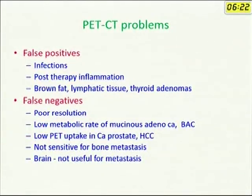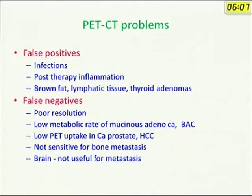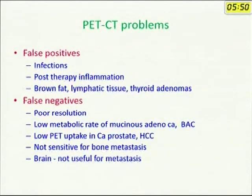Before we go further, it is important to understand that there has been a lot of hype about PET-CT, and there are real issues. One problem is false positives — it is very difficult to distinguish tumor from infection on PET. It can be attempted by quantifying the uptake, but there is a lot of overlap between infection and inflammation. Other false positive issues in cancer imaging include brown fat, lymphatic tissue, and thyroid adenomas.